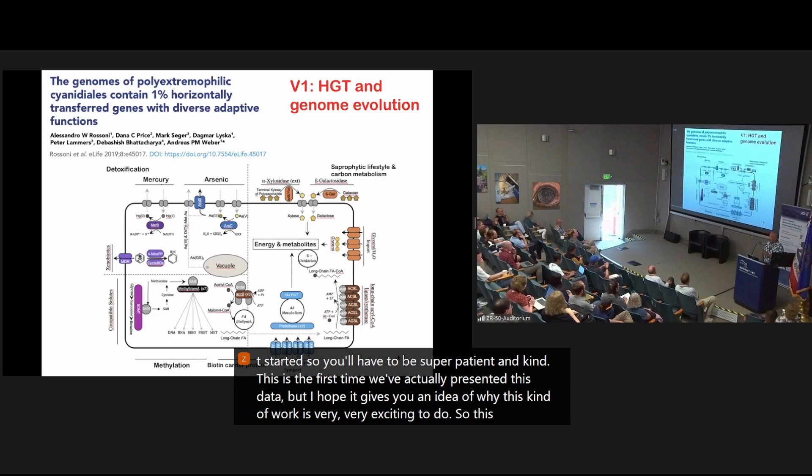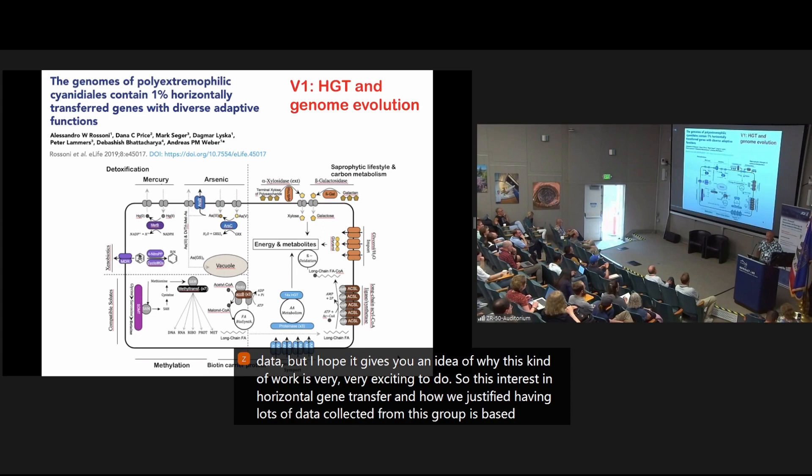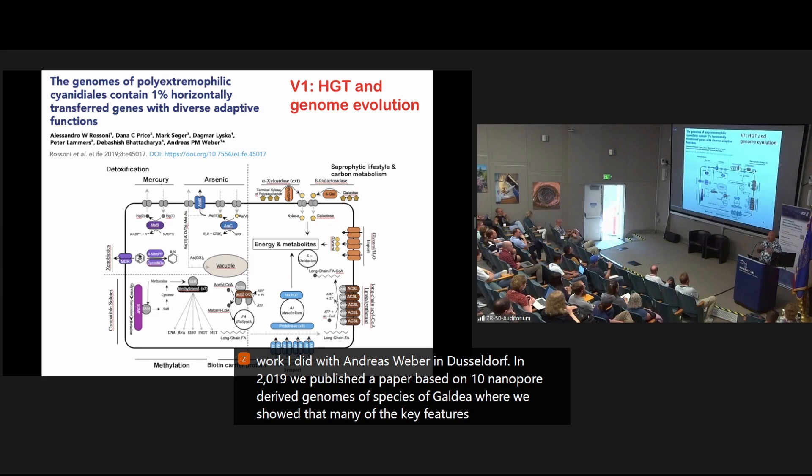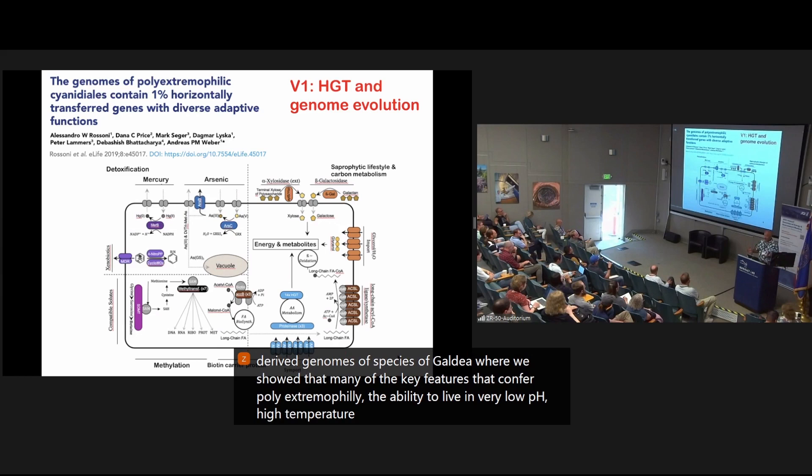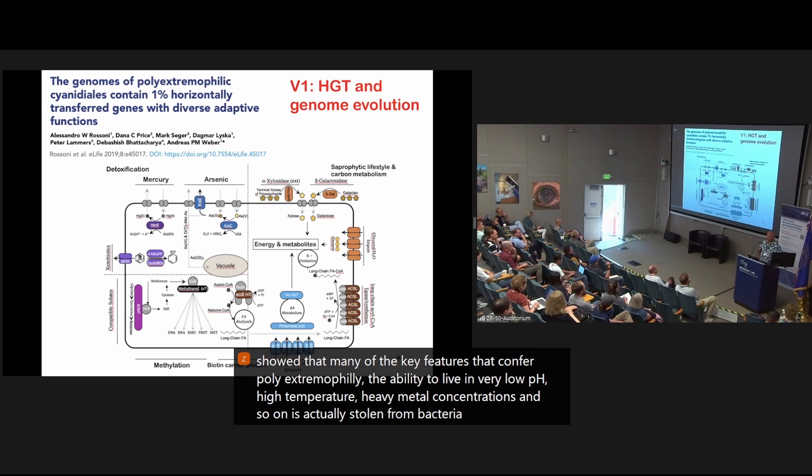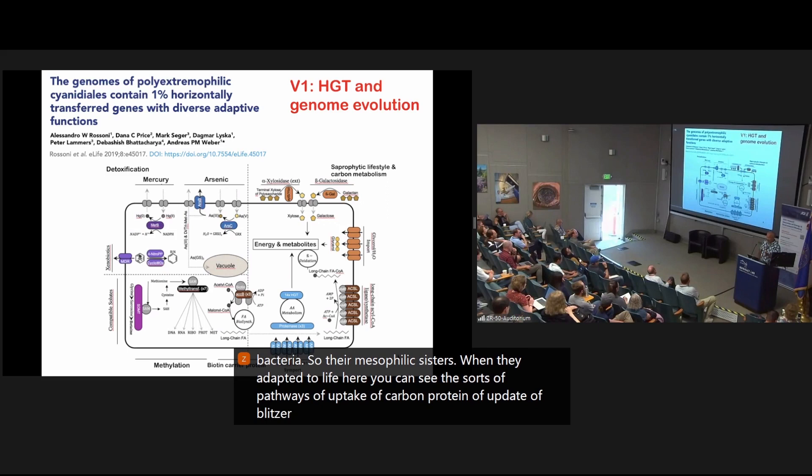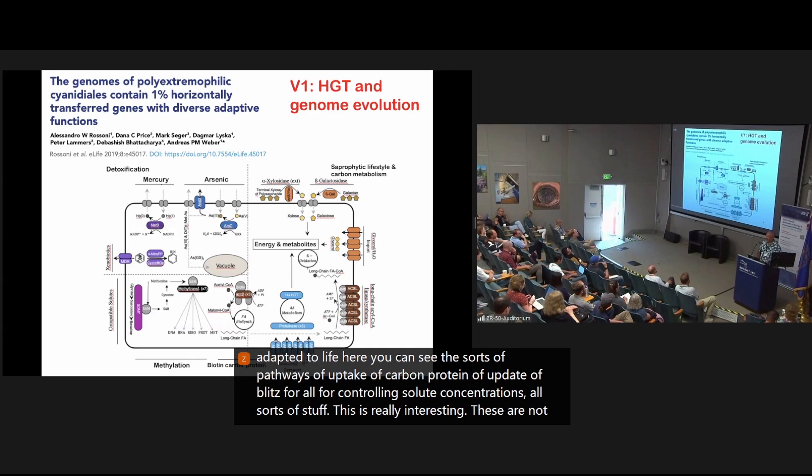So this interest in horizontal gene transfer and how we justified having lots of data collected from this group is based on work I did with Andreas Weber in Dusseldorf. In 2019, we published a paper based on 10 nanopore-derived genomes of species of Galdieria, where we showed that many of the key features that confer polyextremophily, the ability to live in very low pH, high temperature, heavy metal concentrations, and so on, is actually stolen from bacteria. So their mesophilic sisters, when they adapted to life here, you can see the sorts of pathways of uptake of carbon protein, of uptake of glycerol for controlling the solute concentrations, all sorts of stuff. So this is really interesting. These are not bacteria. These are bona fide eukaryotes, but they actually behave in a way like sort of adaptable bacteria, and that's one of the things that makes it really interesting.